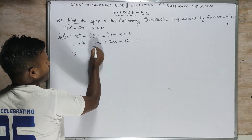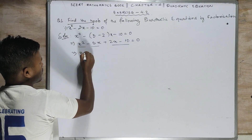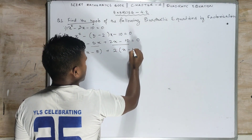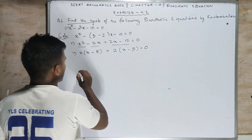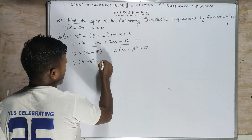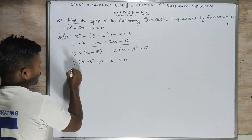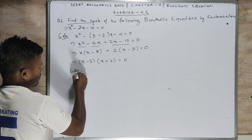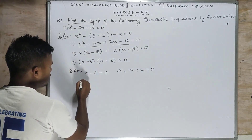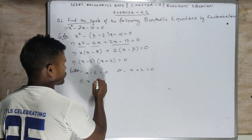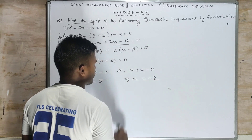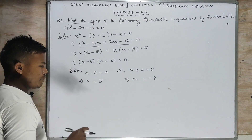Now take common from the first two terms and from the last two terms. x is common from the first two, giving x minus 5; and 2 is common from the last two, giving x minus 5 as well — since 2 into 5 is 10. That gives (x minus 5)(x plus 2) equals 0. So either x minus 5 equals 0, giving x equals 5, or x plus 2 equals 0, giving x equals minus 2.